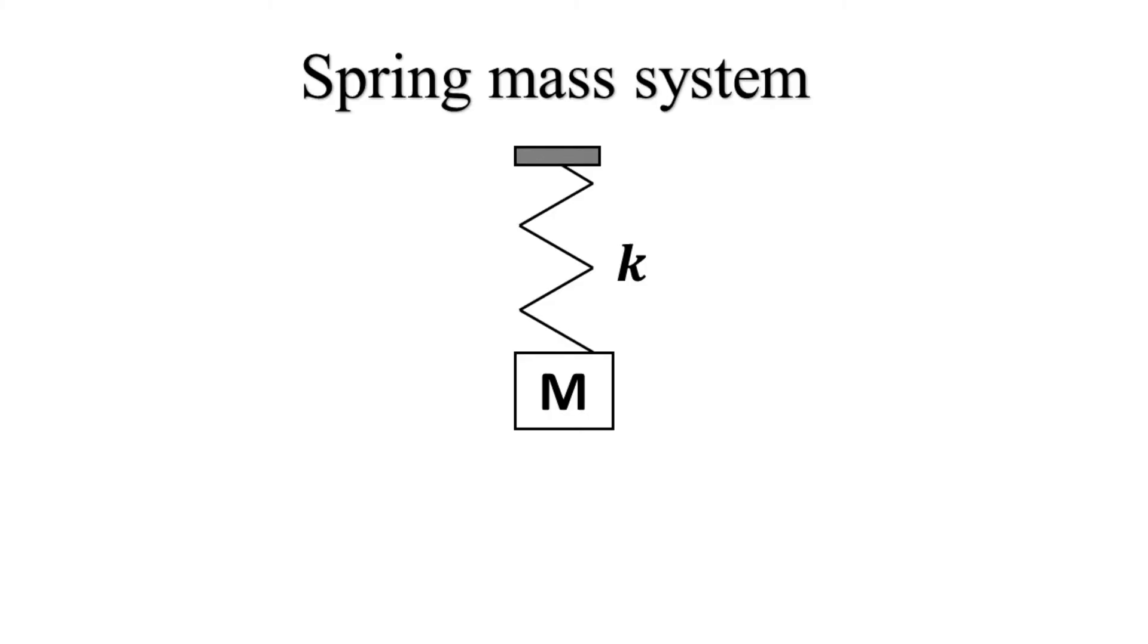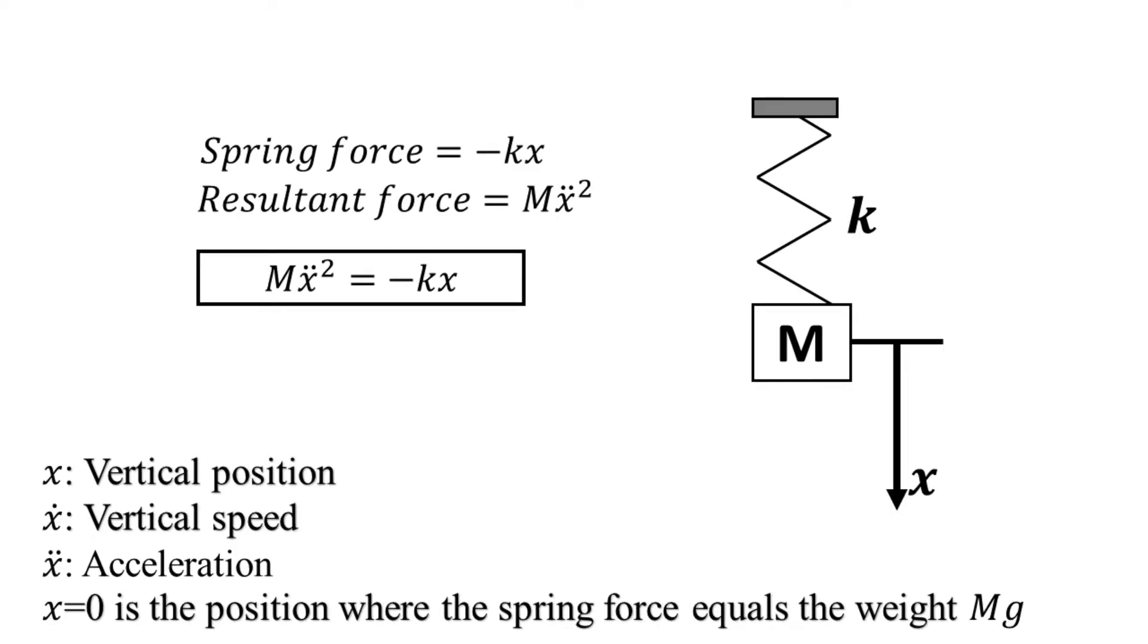The spring mass system is a very common example in physics and in control systems. It is composed by a mass M tied to a spring with elastic constant K. We consider that the origin of the vertical axis X is placed at the balance point where the weight is equal to the elastic force.